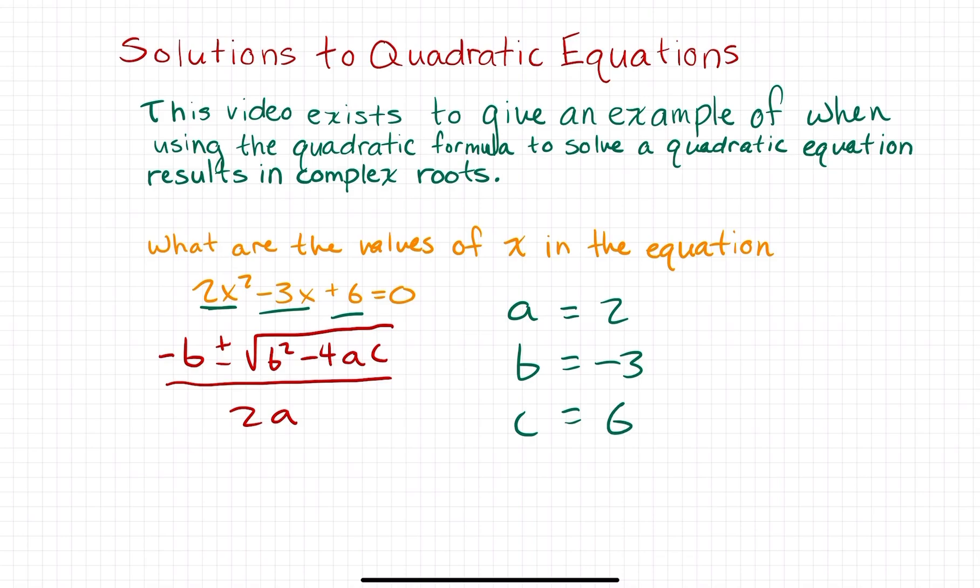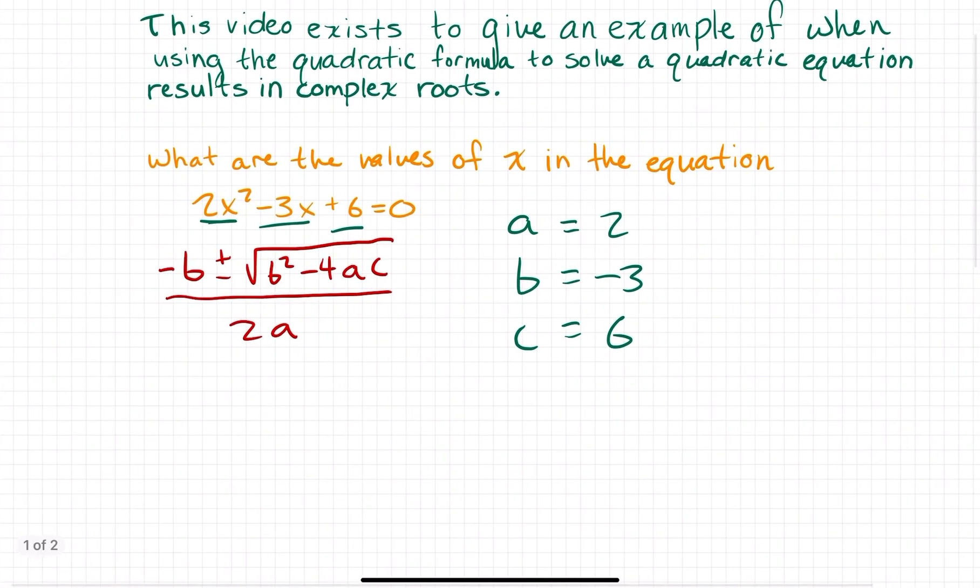All right. So, I'm going to go ahead and plug in these numbers for a, b, and c in the quadratic formula. That's going to give me negative b. Well, b is negative 3, so negative b is going to be positive 3. 3 plus or minus the square root of b squared. Okay, so negative 3 times negative 3 is going to be positive 9, minus 4 times a, which is 2, times c, which is 6.